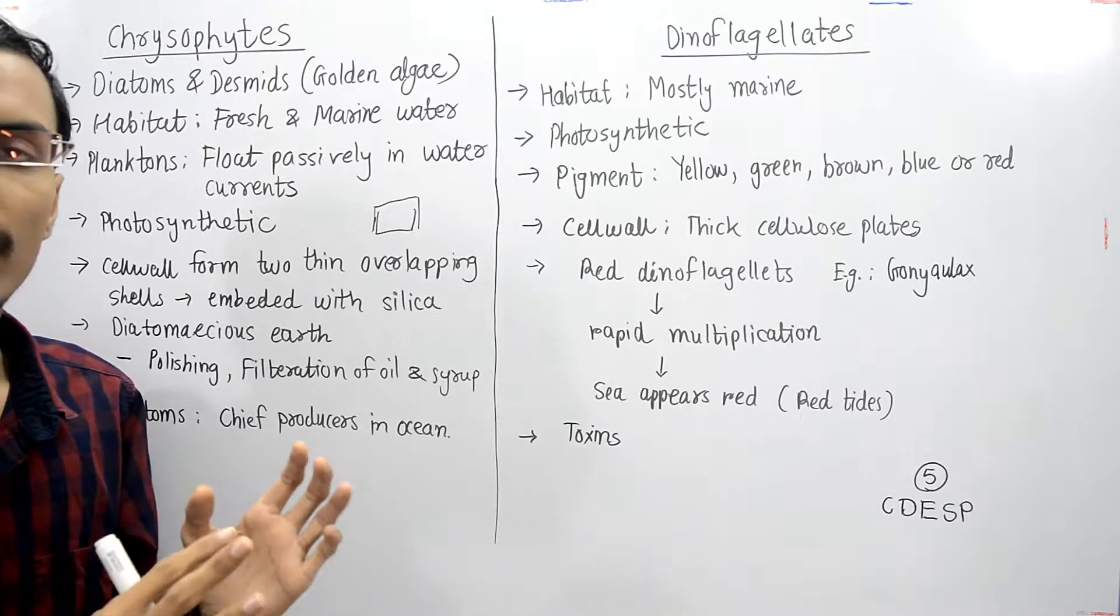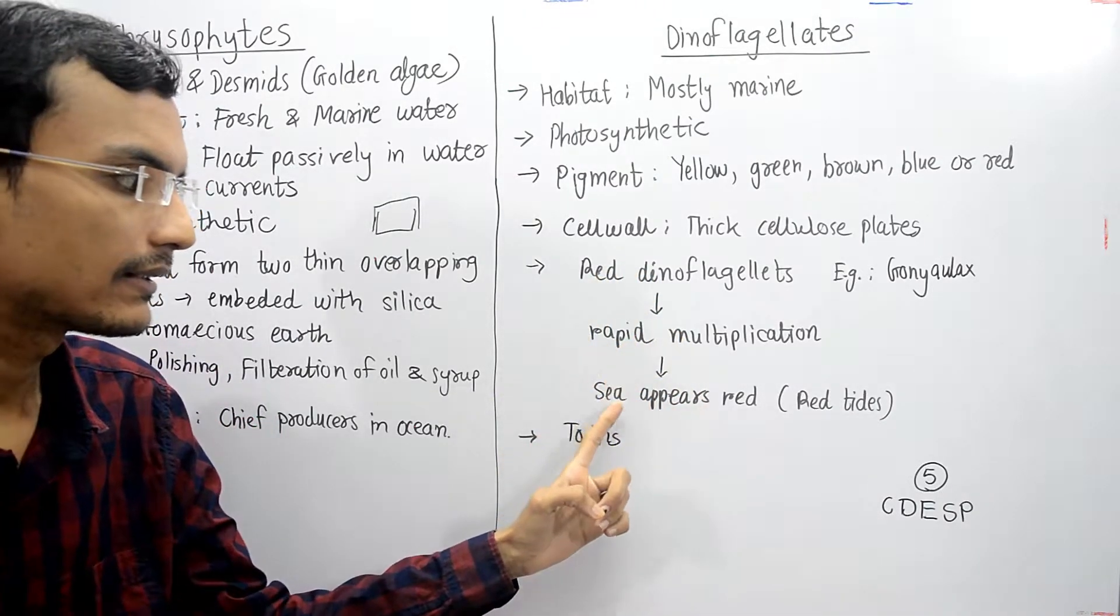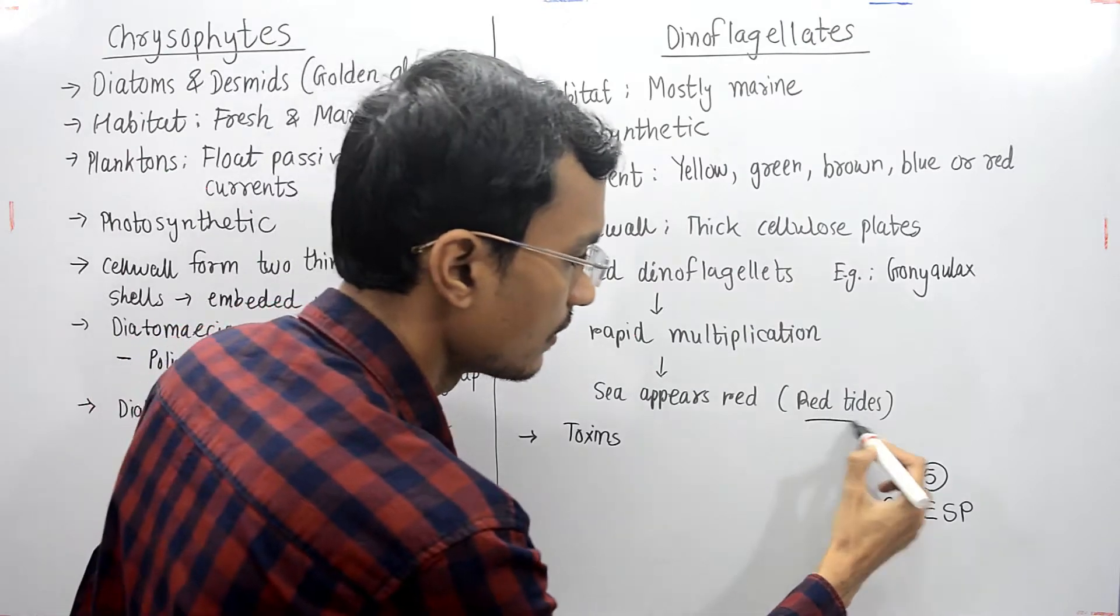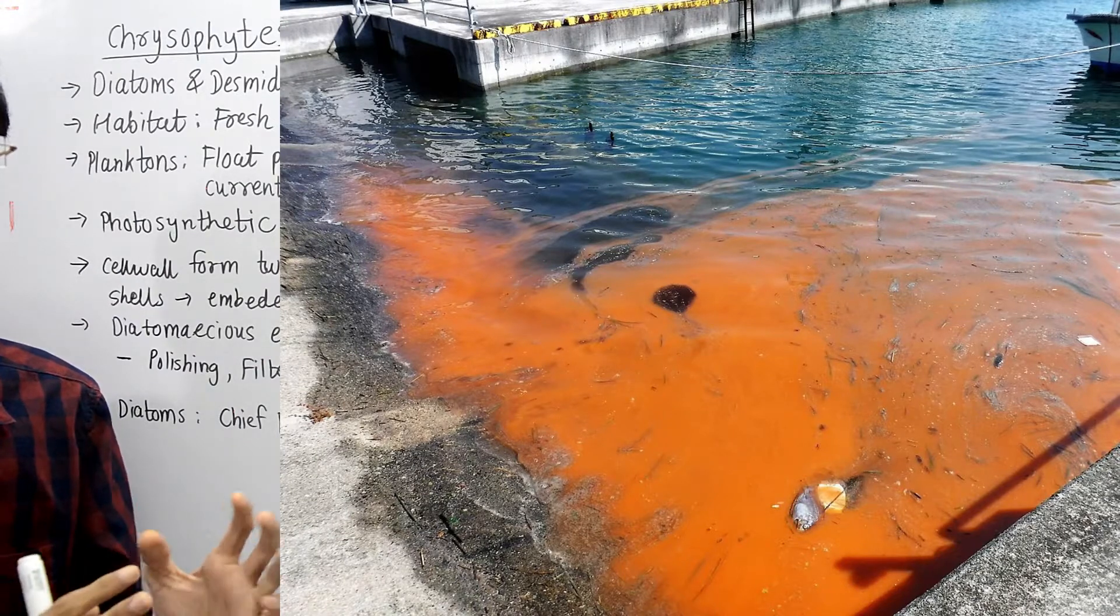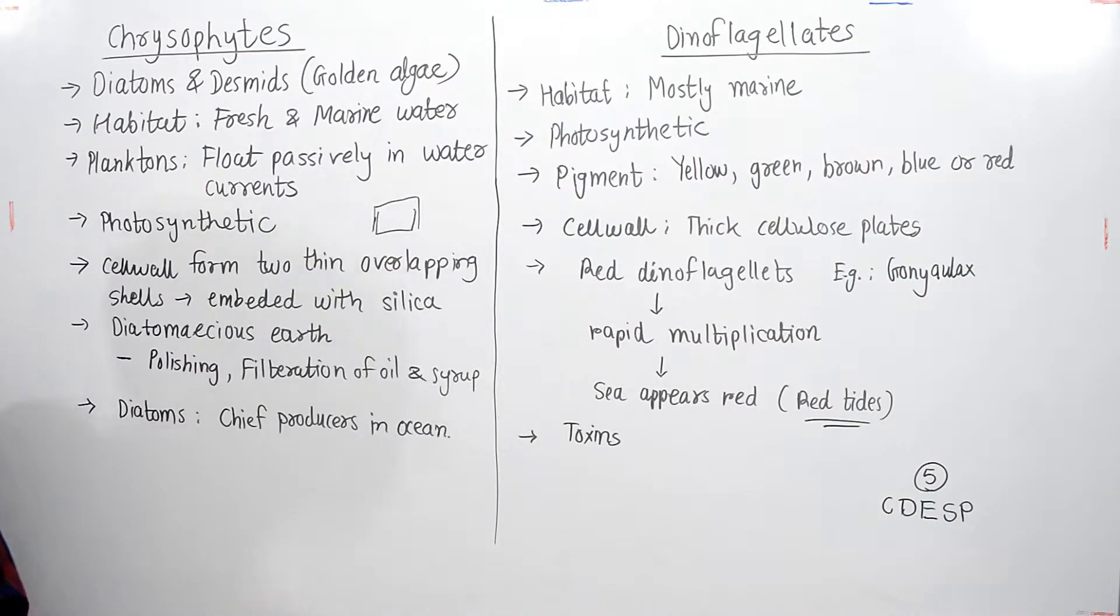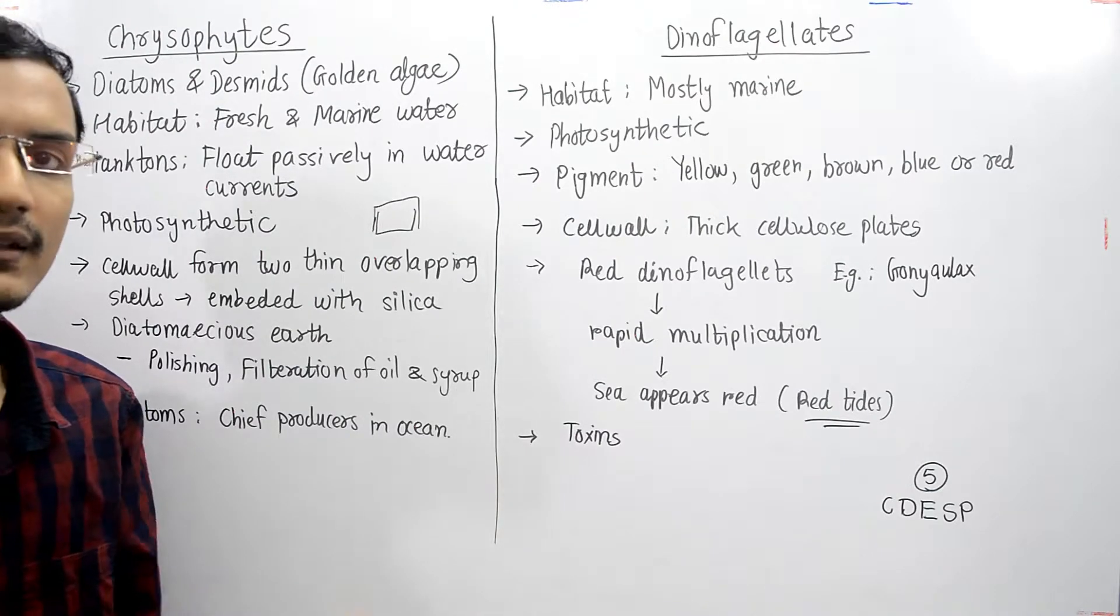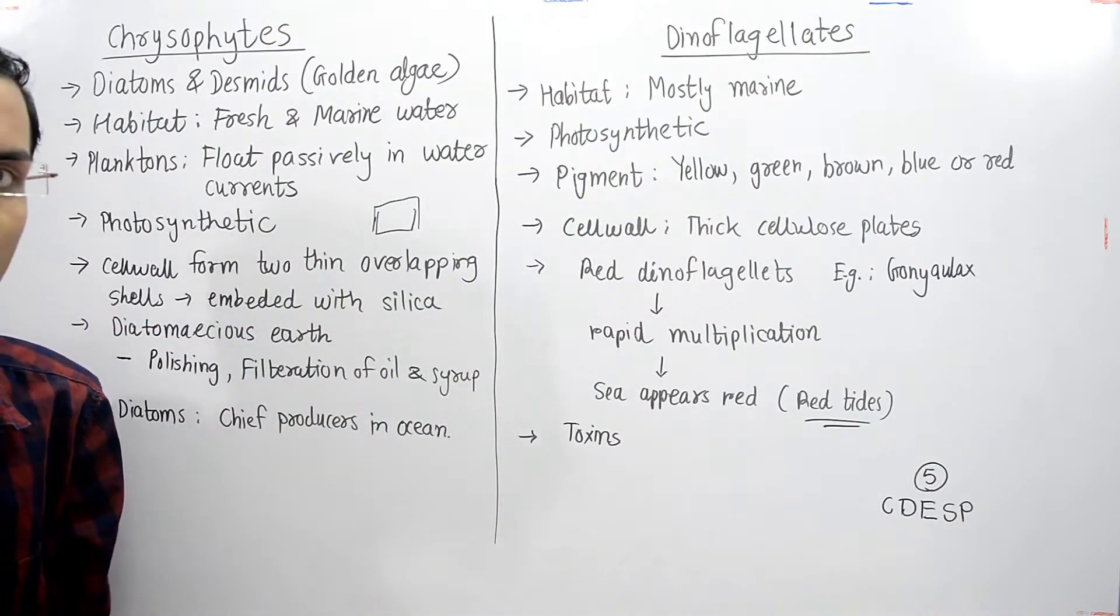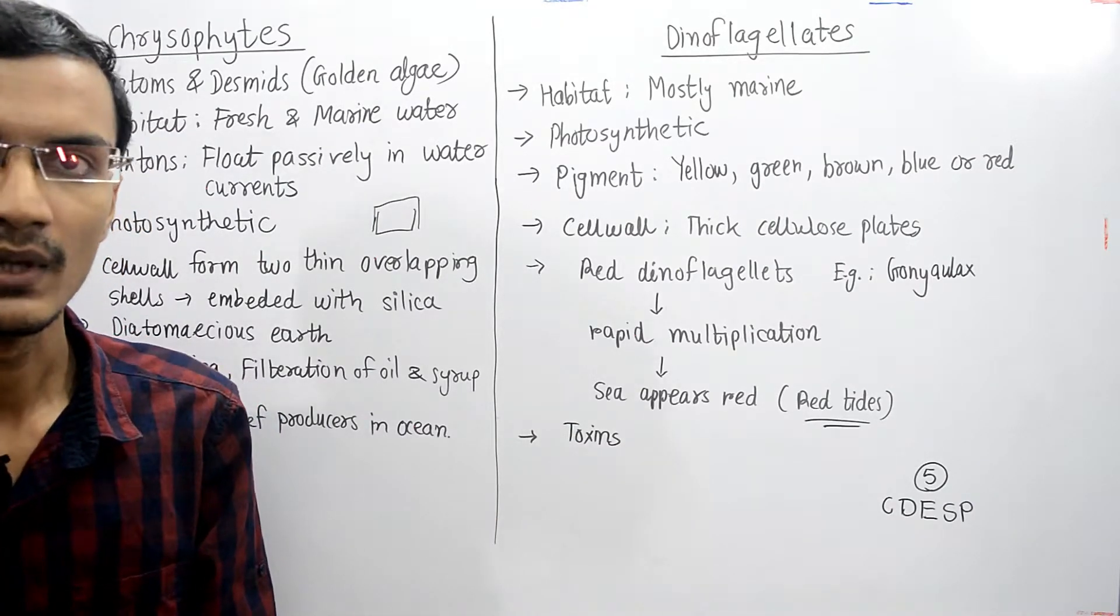Red dinoflagellates rapidly multiply, and this rapid multiplication makes the sea appear red, which is called red tides. These organisms release toxins that may kill other marine organisms in their environment.